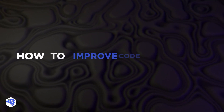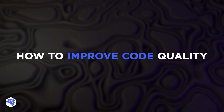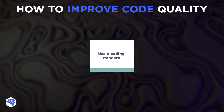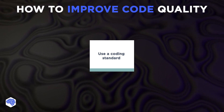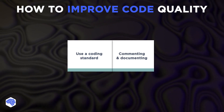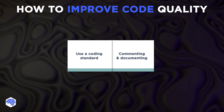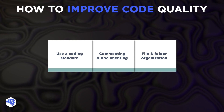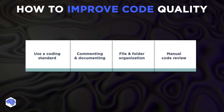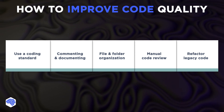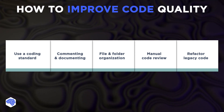Before we end this video, we'll share Jelvix's best practices for improving code quality. First, use a coding standard — it ensures everyone uses the same coding style and improves consistency and readability. Next, commenting and documenting help other developers understand your code better. Next, file and folder organization. We also use manual code review. And finally, refactor legacy code, as it helps clean up the application and makes it easier to maintain.